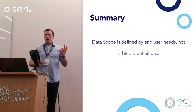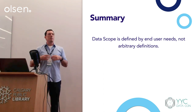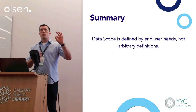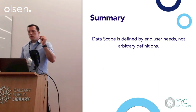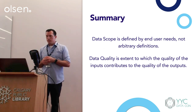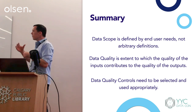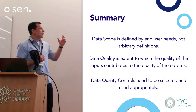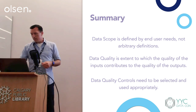In conclusion: data scope is defined by end-user needs. Avoid arbitrary definitions of what data is relevant to bring over from the old system to the new. This principle applies not just to system conversions but to any business process, solution, or report involving data quality. Data quality is the extent to which the quality of inputs contributes to quality of outputs. Data quality controls — input validations, restrictions, notifications — come first, then exception reporting where you make human judgment calls on a case-by-case basis. We're still useful humans.